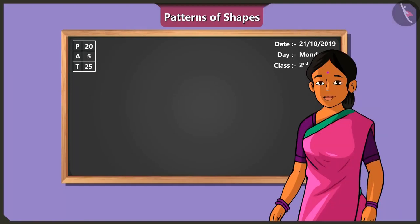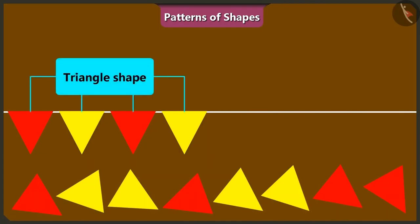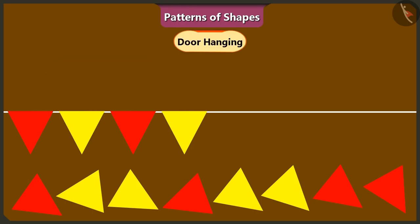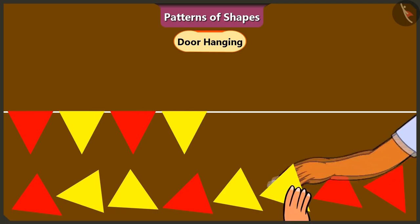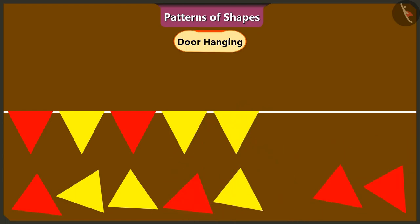See this. I have a toran or a decorative door hanging in the shape of a triangle. Vinny and Binny, both of you will complete this toran in this fairy pattern. Yes, ma'am. Binny, keep putting glue on the triangles and I will keep pasting them like this.